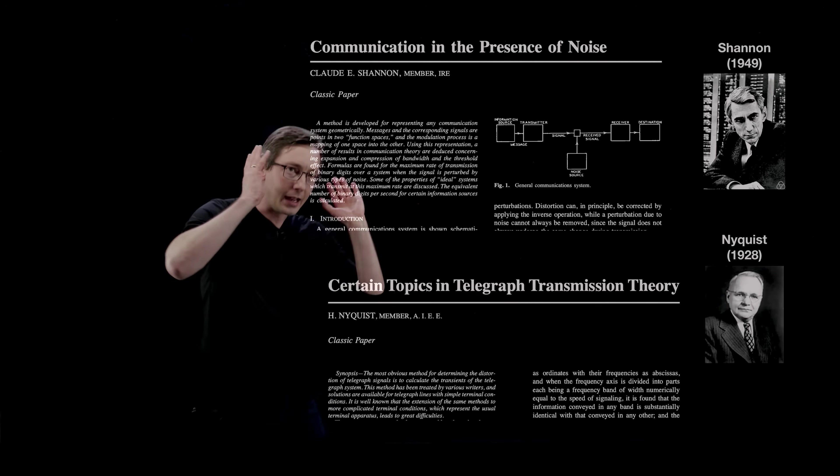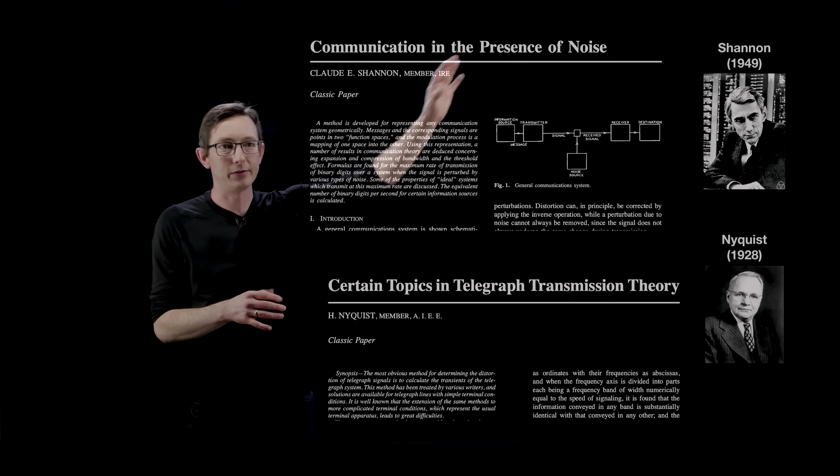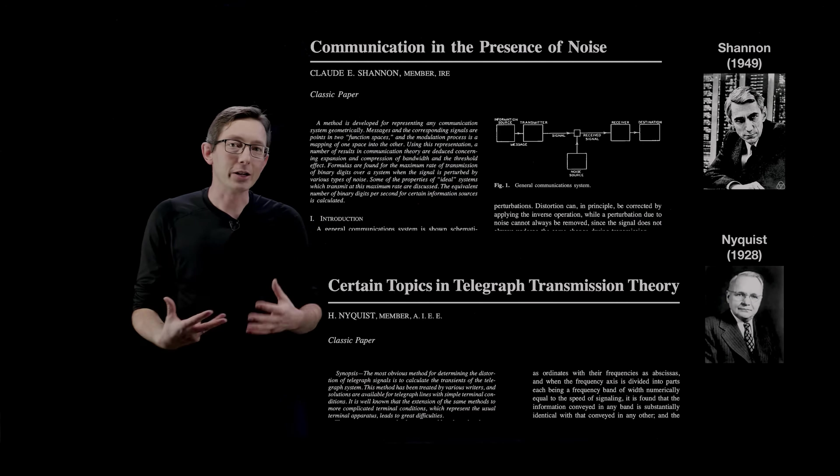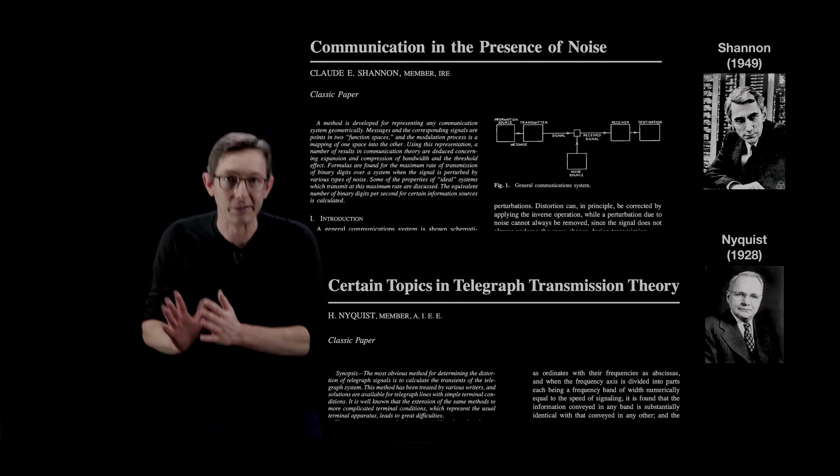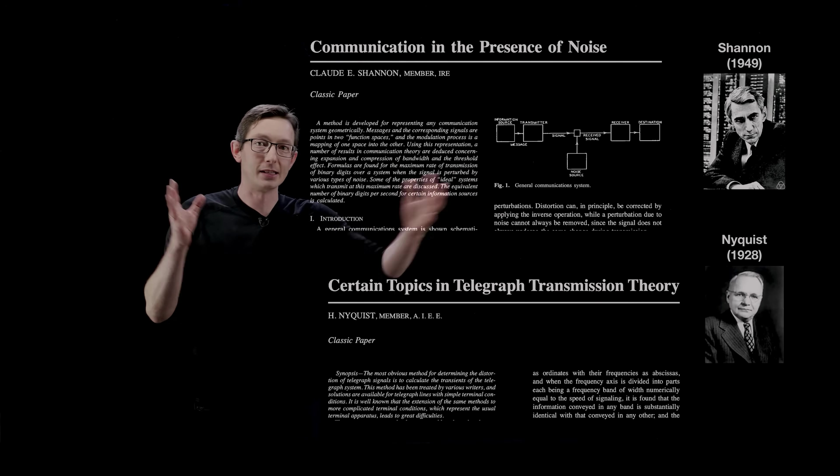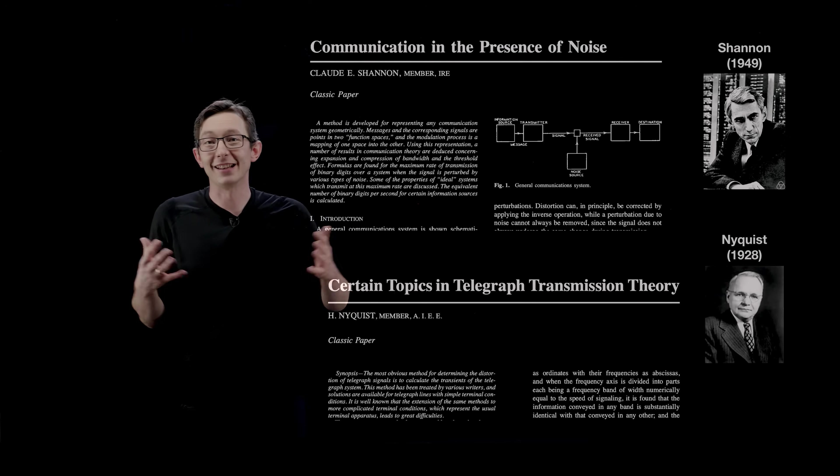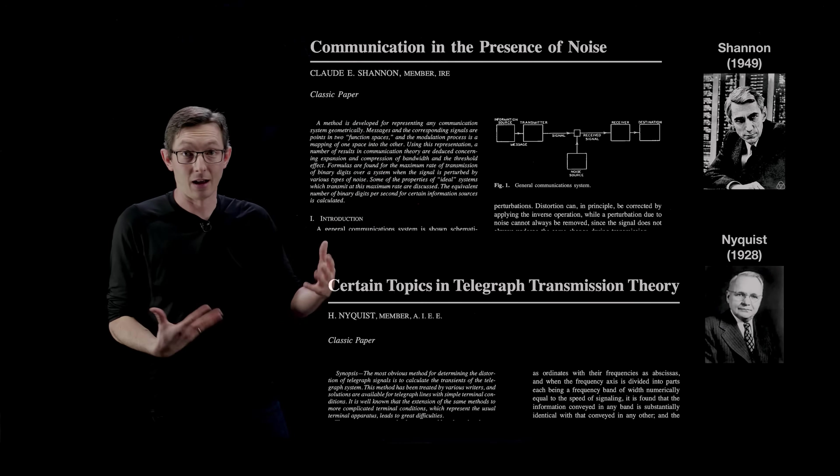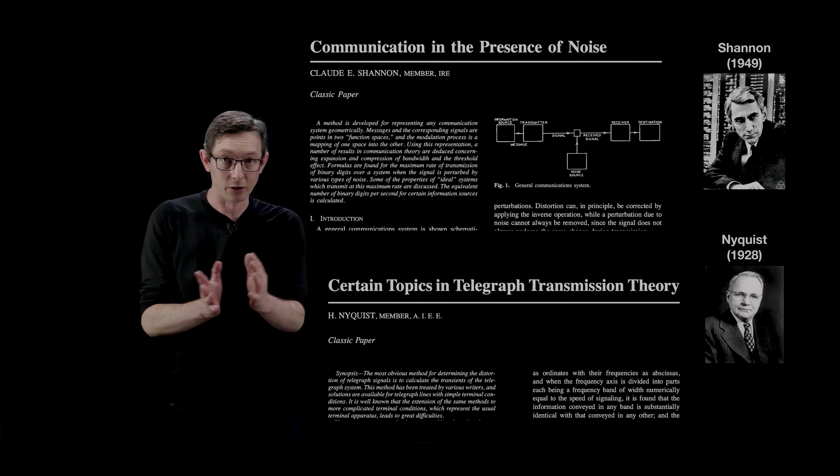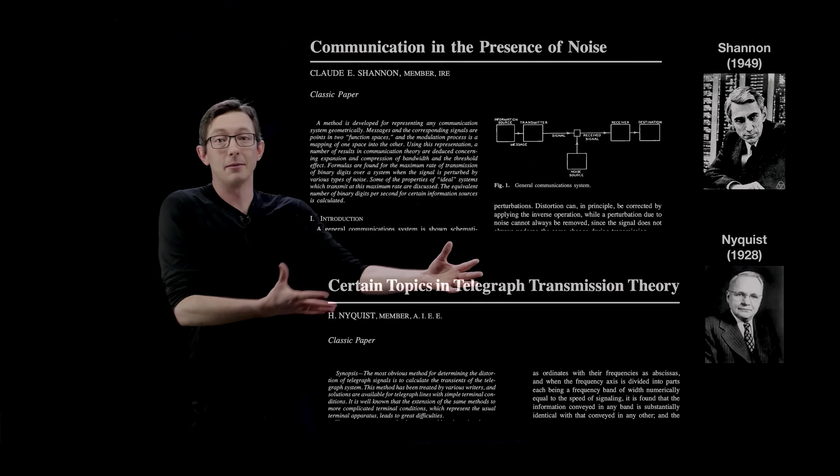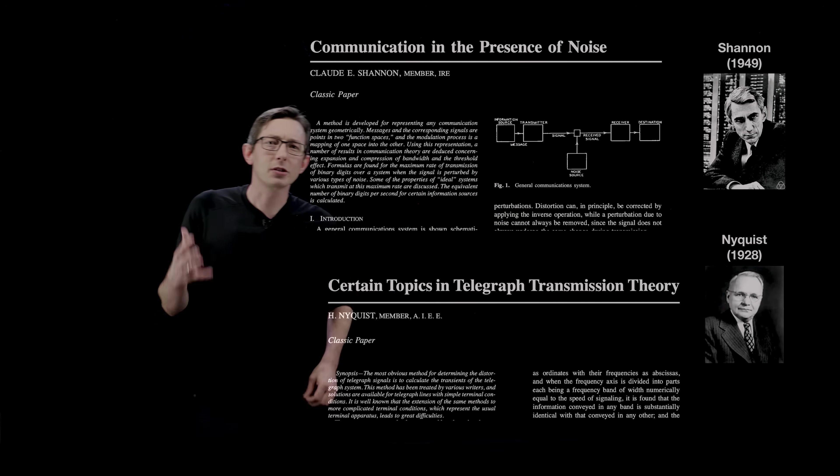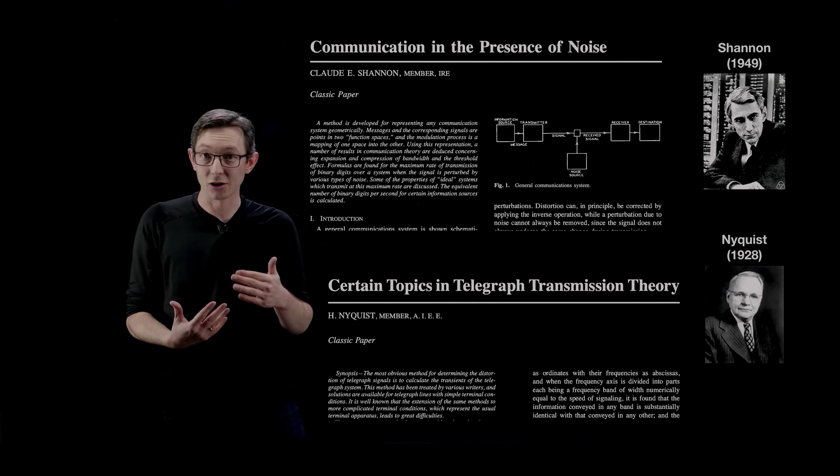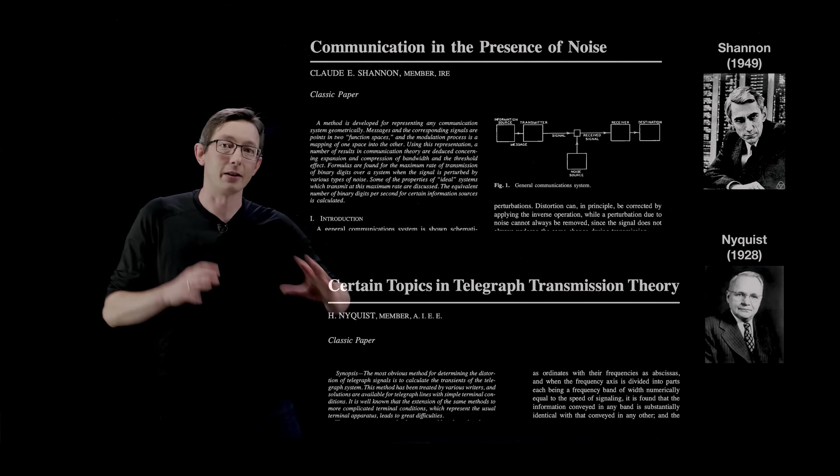So they wrote these two classic papers, Communication in the Presence of Noise and Certain Topics in Telegraph Transmission Theory. And there was this idea of how much can you compress information if you want to send it over a long distance and then be able to decompress it and get the full high-resolution signal out at the end. So a really important problem of their time based on communication and signal processing over long distances. How much can you compress information and expect to get a faithful decompression downstream on the other end. And of course, we already had lots of knowledge about this. There was already Morse code and some redundancy built into communications in telegraphing. But this really put this on a firm mathematical footing.